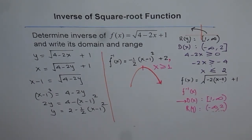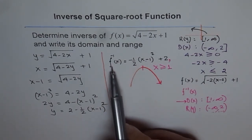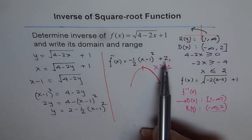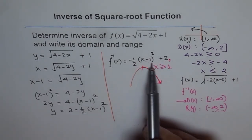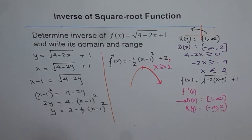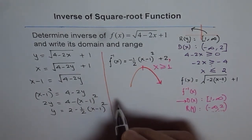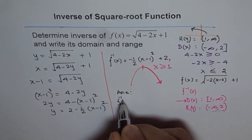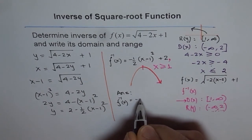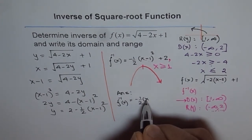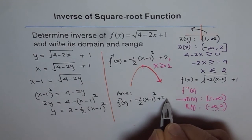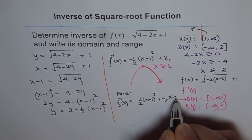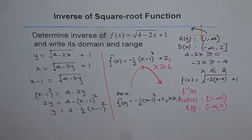If you do not write this, then your solution is wrong. Because if you write the inverse as minus one-half (x minus 1) squared plus 2, that means there is no restriction on the domain. So you have to add the restriction. The final answer is f inverse of x equals minus one-half times (x minus 1) squared plus 2, where x is greater than or equal to 1.